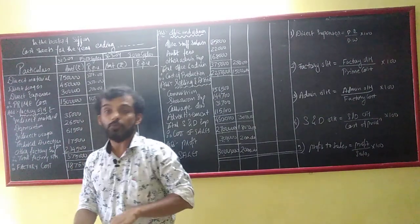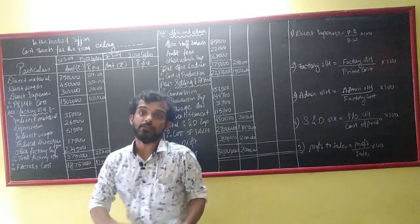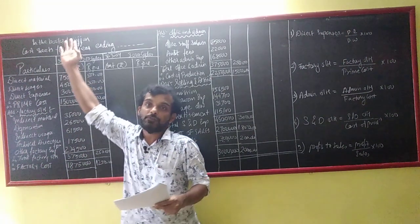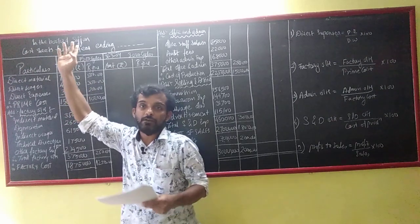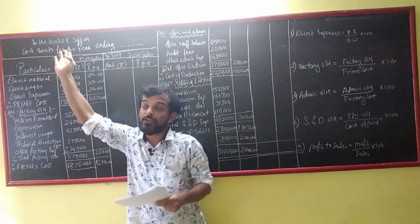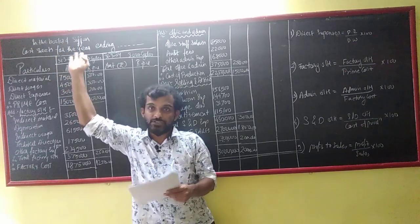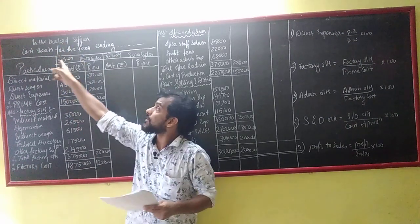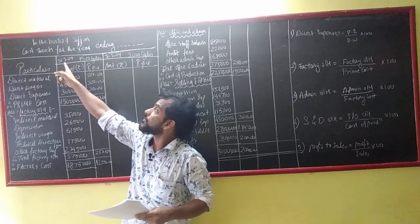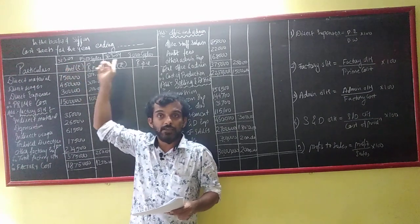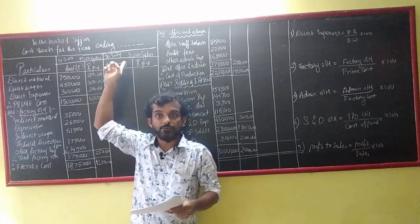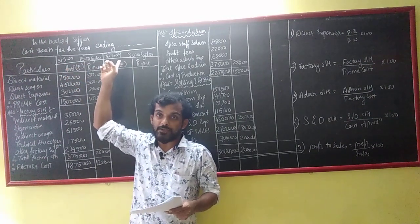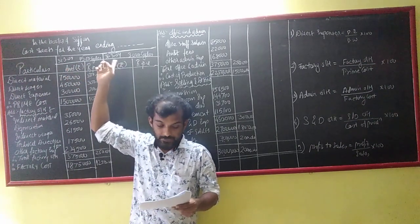I have written the things here so that time is saved. So, in the books of Sajjan Company, we prepare the cost sheet for the year ending 31st March 2008 — 1000 and 500 cycles — and 31st March 2009 — 3000 cycles.